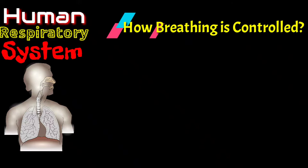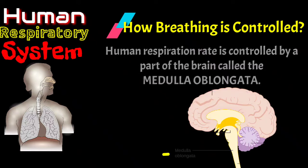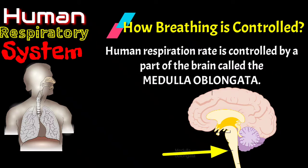How is breathing controlled? Breathing is controlled by the medulla oblongata. The medulla oblongata monitors carbon dioxide in the blood. As carbon dioxide increases, nerve impulses make the diaphragm contract, bringing air into the lungs. The higher the carbon dioxide level, the stronger the impulses.